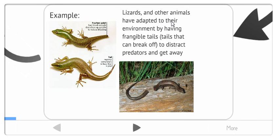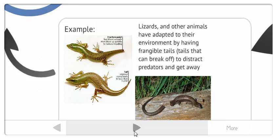Lizards and other animals have adapted to their environment by having frangible tails, tails that can break off, to distract predators and get away. So, these two guys can break off their tails, distract predators, whoever's hunting them, and just scurry away, get away real fast.